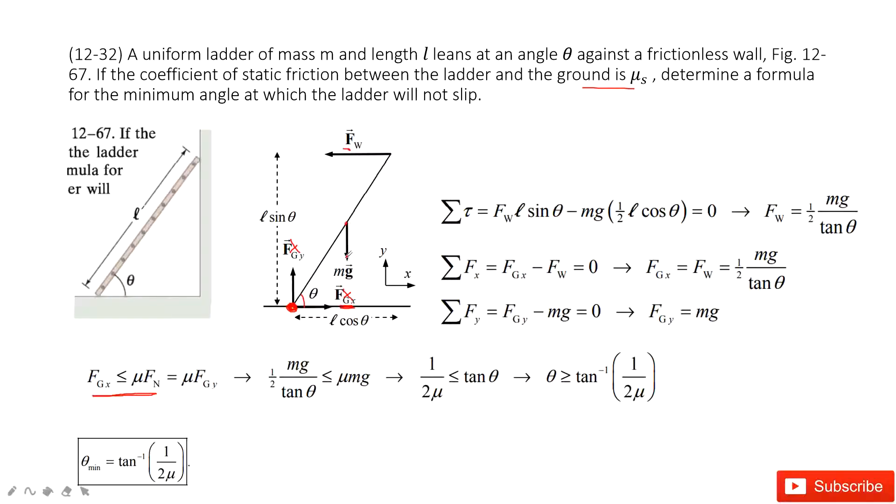Now we look at the gravity. The perpendicular distance from the gravity to the rotation axis is half of l cos theta. Because this length is l cos theta, this is just half of it. Now we look at the force, the wall to the stick, F_w. For F_w, the perpendicular distance to the rotation axis is l sin theta. So the torque F_w l sin theta minus mg, one half l cos theta equal to zero. We can use the right-hand rule to determine its direction. We find it's just the opposite.